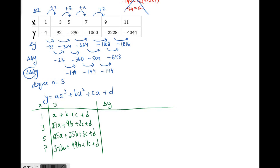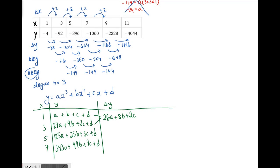Next, we find the change in y by subtracting the top expression from the bottom expression, just as we calculated the numerical first differences. Doing this, terms cancel and you get expressions such as 26a + 8b + 2c for the first difference. We do the same for the remaining pairs. Then for the second differences, subtracting top from bottom gives expressions like 72a + 8b, and so on.